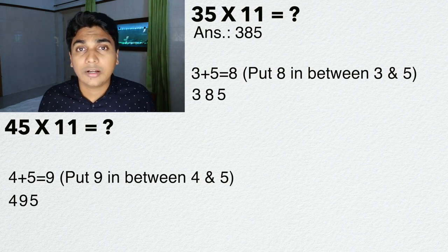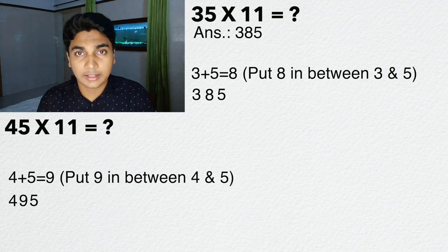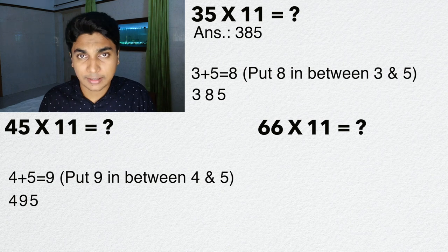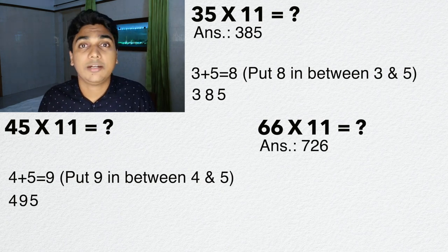Now some of you might be wondering what to do if I get a two-digit number while adding those two. So don't worry, I got your back. Let's take an example. What is 66 times 11? The answer is 726.